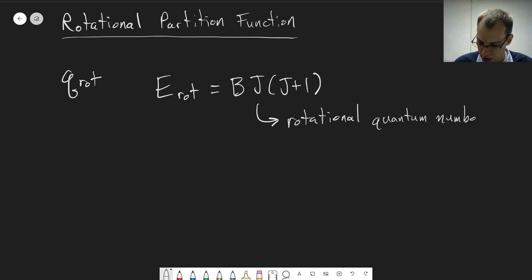And the values of j can go from 0 and increase by integers up to whatever arbitrary value. And one other thing to know for the rotational energy is that, unlike the vibrational energy, this does have a degeneracy. So the degeneracy depends on j and is given by 2j plus 1. So we need to take that into account when we're calculating a partition function.